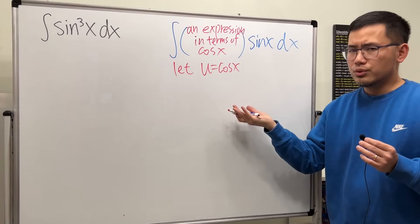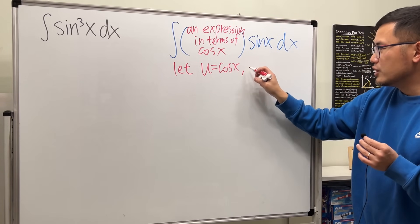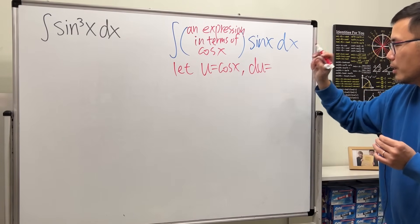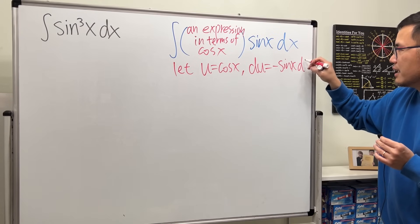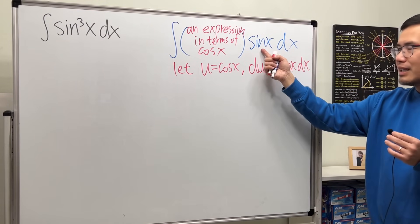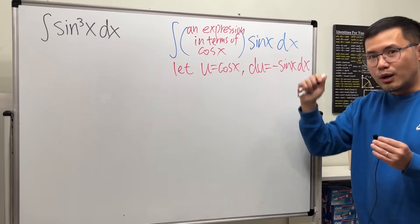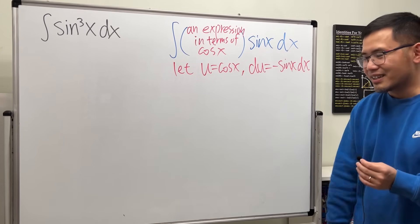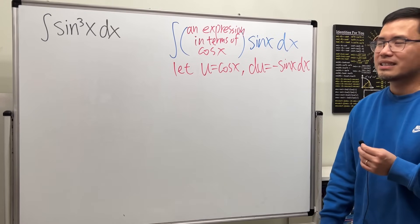Why would you do that? Because after we differentiate both sides we get du equal to negative sine x dx, and we happen to have that sine x factor on the outside to help us cancel things out. Just be careful with the negative.